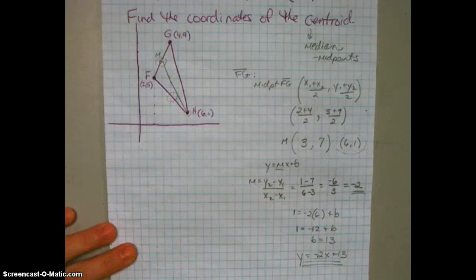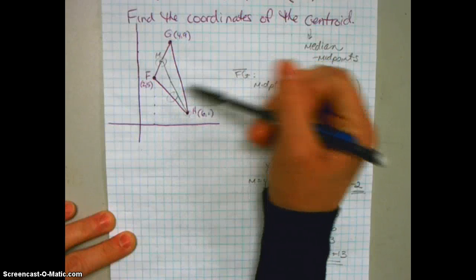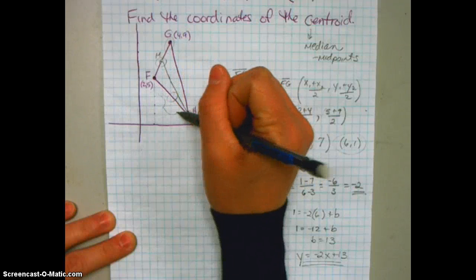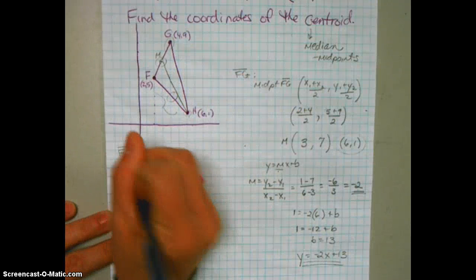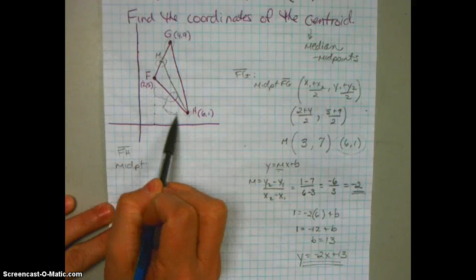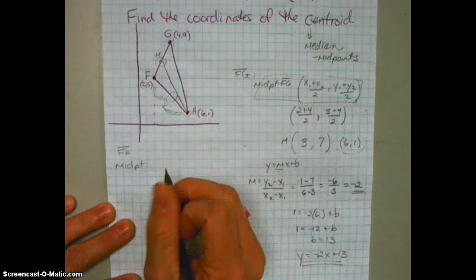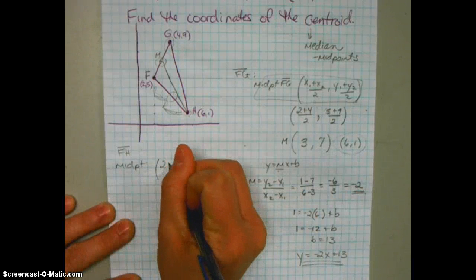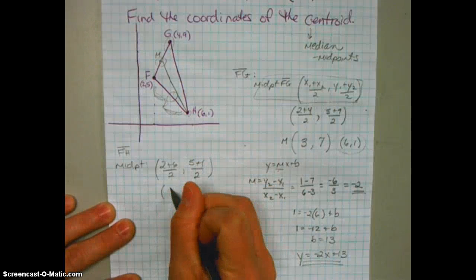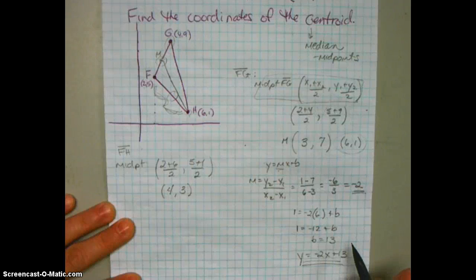Now for the other median, from G to the midpoint of FH. Let's find the midpoint of segment FH. Using the midpoint formula: (2 + 6)/2 and (5 + 1)/2, that's 8/2 = 4, and 6/2 = 3. So the midpoint of FH is (4, 3). The median starts at G and goes to the midpoint at (4, 3).